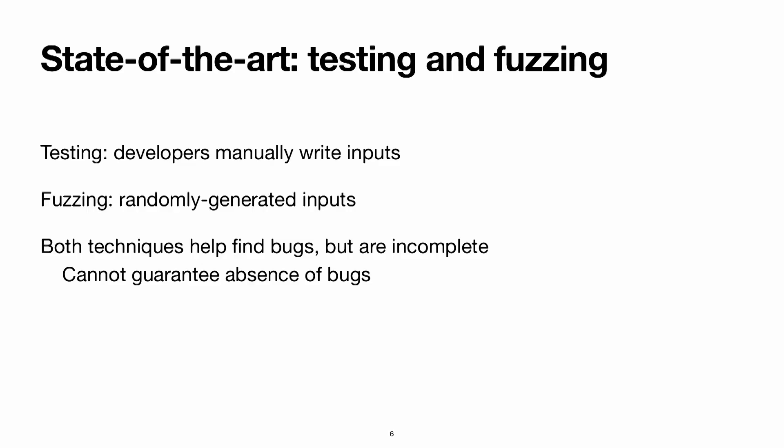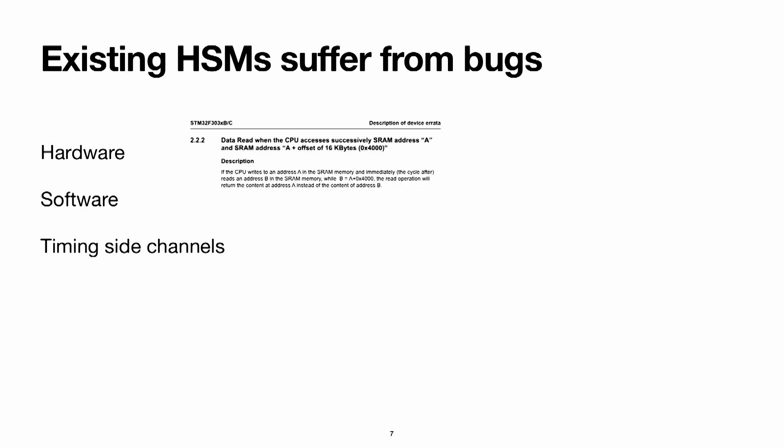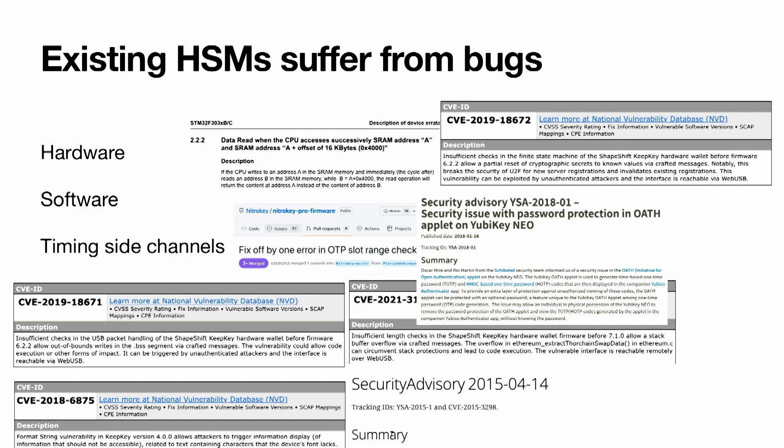What do people do today to build secure HSMs? The standard state-of-the-art is testing and fuzzing. Testing involves manual test cases; fuzzing uses automated random input generation to check correct behavior across many inputs. These are fruitful techniques — they find bugs — but they're not complete. They can't guarantee there are no more bugs. Adversaries keep finding bugs in real hardware security modules, ranging from hardware CPU implementation errors to software issues like buffer overflows, logic errors, and timing channels.